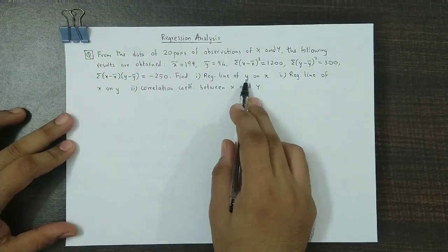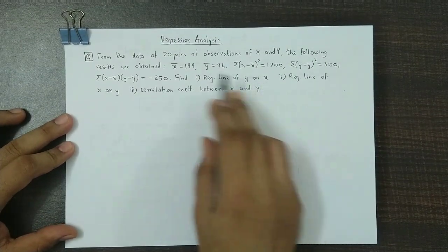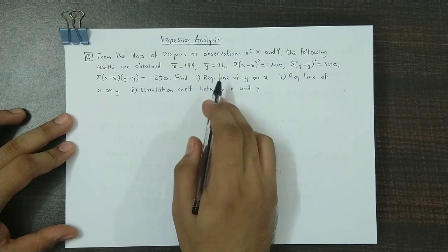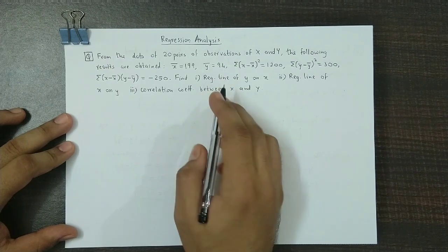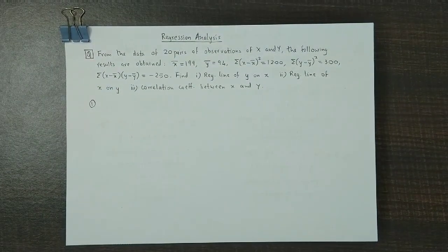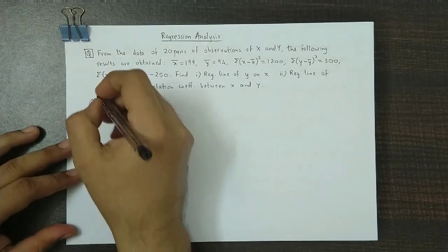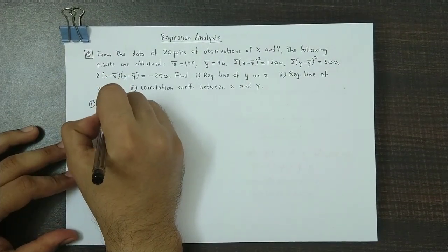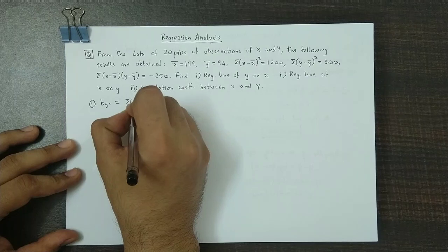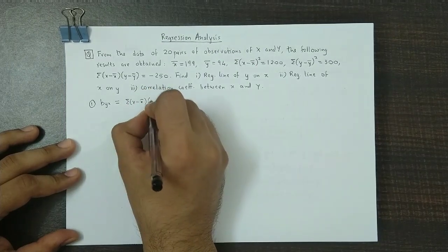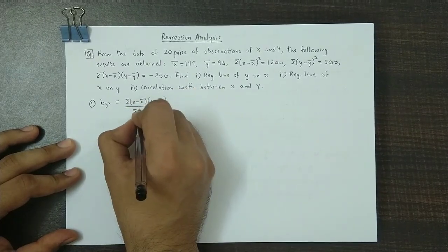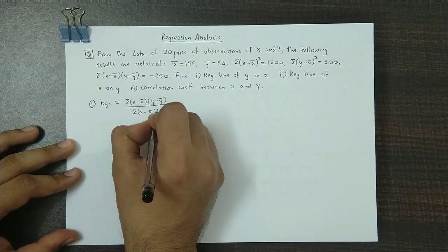In order to obtain the y on x regression equation, we need x bar which is already given, y bar, and byx, that is the regression coefficient of y on x. The first step is to calculate byx. So byx is given by summation of (x minus x bar)(y minus y bar) divided by summation of (x minus x bar) squared.